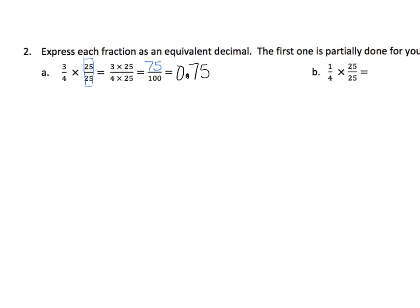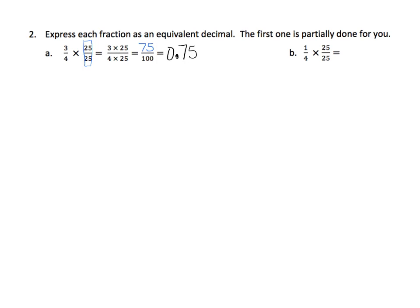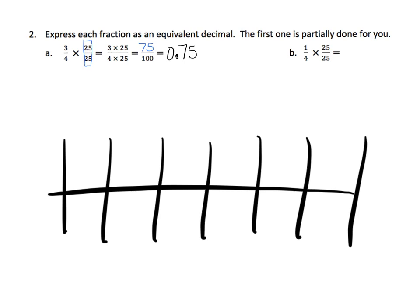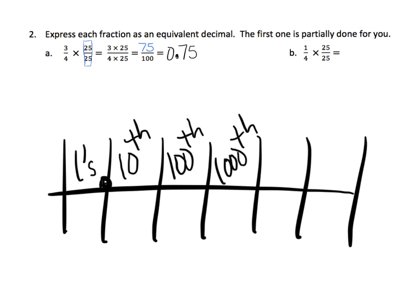If you're not entirely sure how 75 hundredths becomes 0.75, go to a place value chart. Here are the ones, the decimal point, then tenths, hundredths, thousandths. When we have 75 hundredths, you can't have 75 in a single column — every set of 10 equals one dot in the column to the left. So 75 hundredths is equivalent to 7 tenths and 5 hundredths left over.